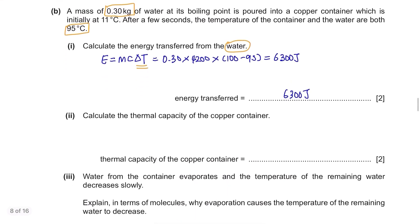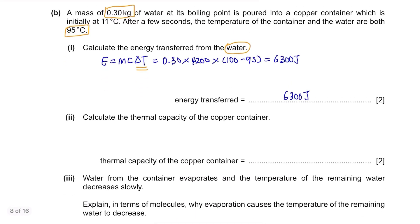Calculate the thermal capacity of the copper container. We have a specific formula to calculate thermal capacity. It's energy divided by change in temperature. This time, it's about the container so it should be the change in temperature of the container. Energy is the same from the above question, 6300 and the temperature increased from 11 to 95, 75 joules per degree Celsius.